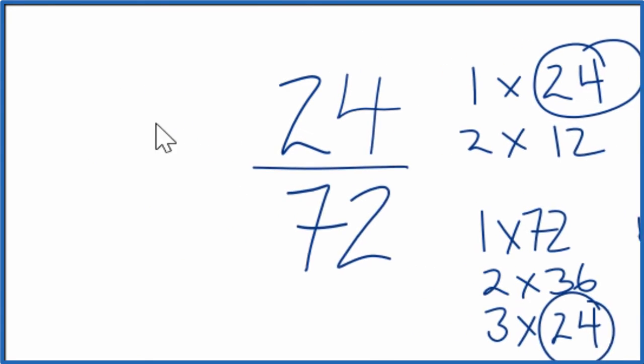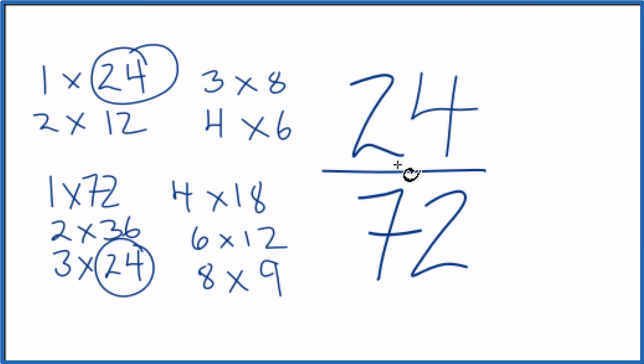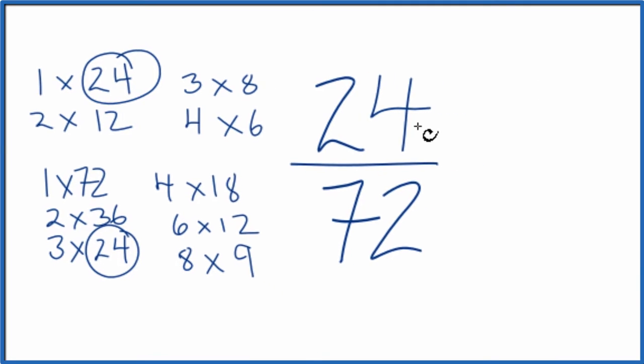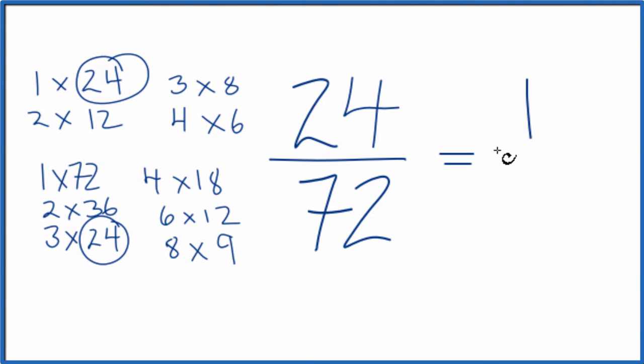Let's move this over here. So I divide 24 by 24. That just gives me one. And when I divide 72 by 24, I get three. So 24/72 can be simplified or reduced down to one third. We can't reduce this any further. And these are equivalent fractions. You divide 24 by 72 or one by three, you'll get the same number.